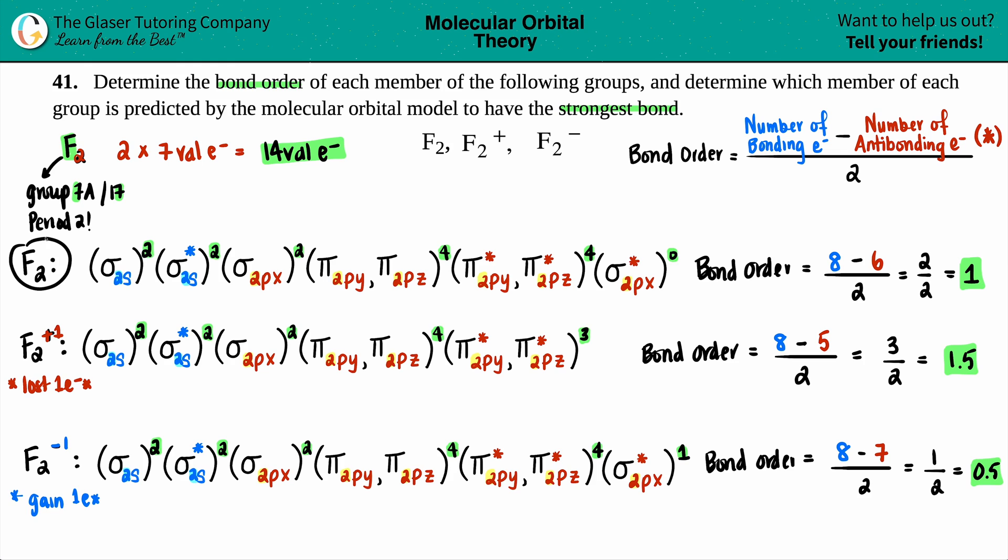So the bond order for F2 is 1. The bond order for F2 plus 1 is 1.5. And the bond order for F2 minus 1 is 0.5. Now, the thing was, which one has the strongest bond? The strongest bond is always going to be the highest bond order. So now you're just basically ranking the numbers. So out of these three, 1.5 is the highest number. So F2 with the plus charge would be the strongest bond. And that's it.